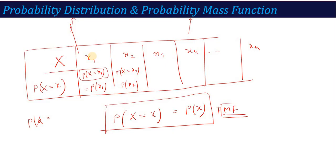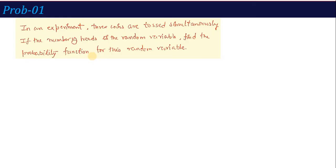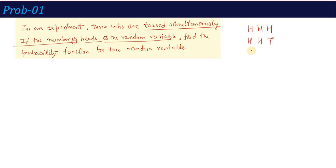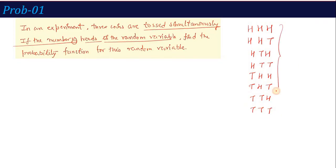Let's take an example for better understanding. In an experiment, three coins are tossed simultaneously. If the number of heads is the random variable, find the probability function. When three coins are tossed simultaneously, the possible outcomes are: HHH, HHT, HTH, HTT, THH, THT, TTH, TTT. These are the eight combinations which we can get when three coins are tossed simultaneously.